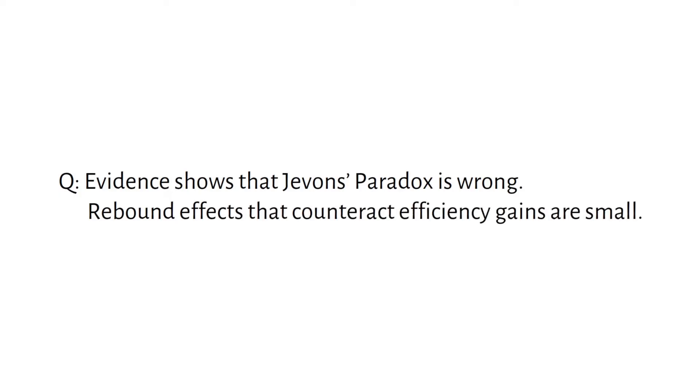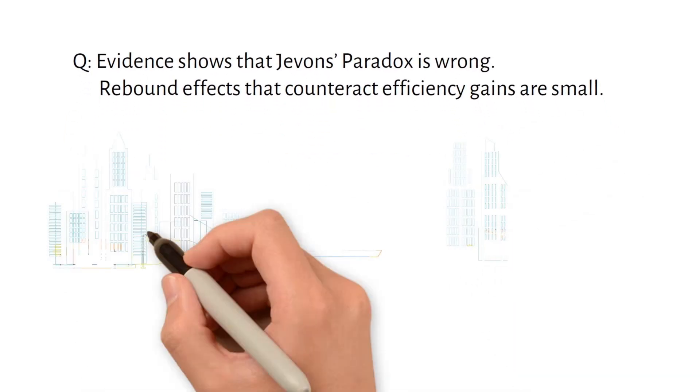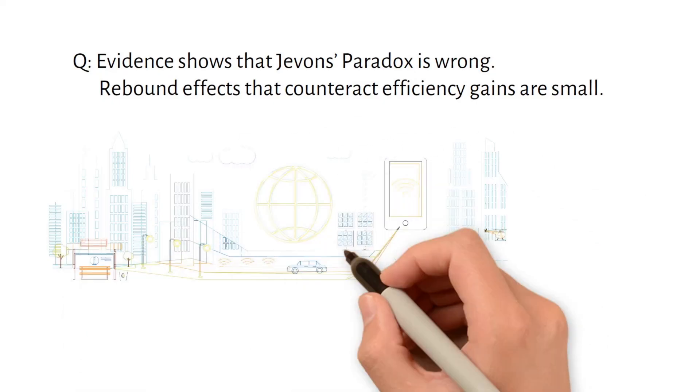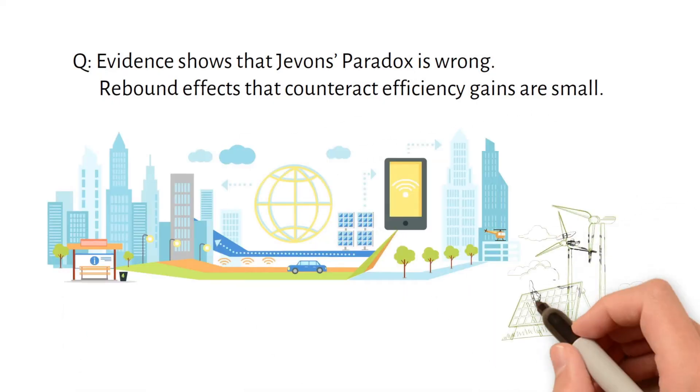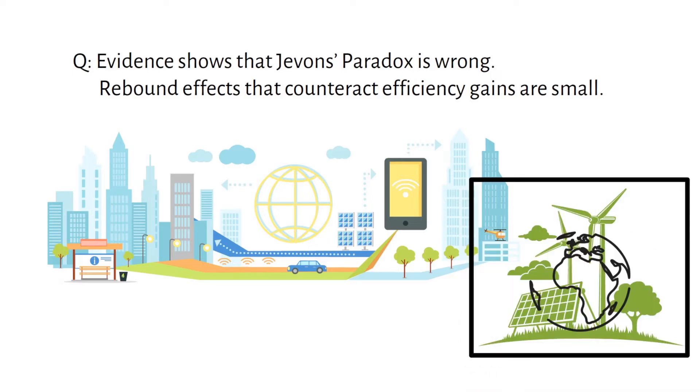Evidence shows that Jevon's paradox is wrong. Rebound effects that counteract efficiency gains are small. Studies are unable to track the full broader impacts of efficiency gains on the global economy, leading to a misunderstanding of their true effect.